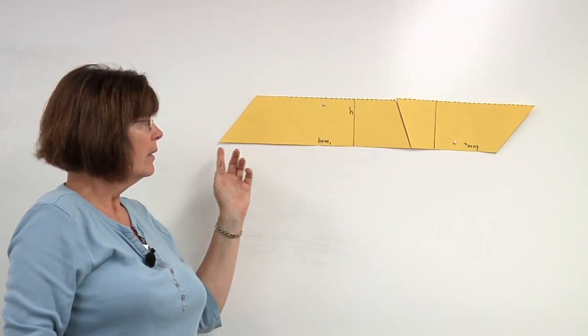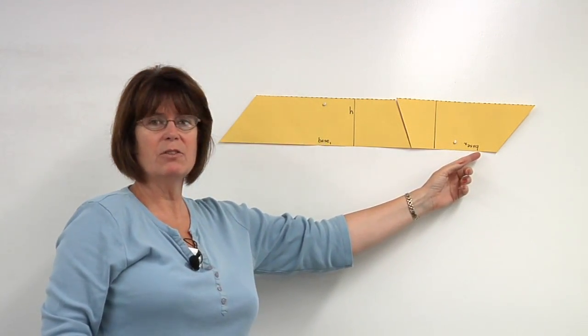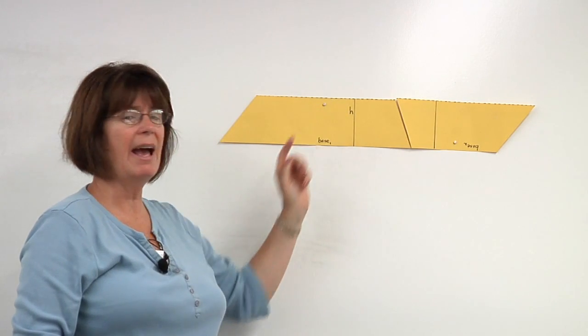Therefore, the area of the trapezoid is base 1 plus base 2 times half the height.